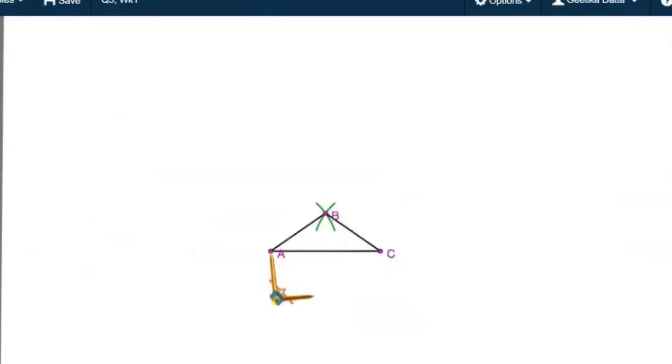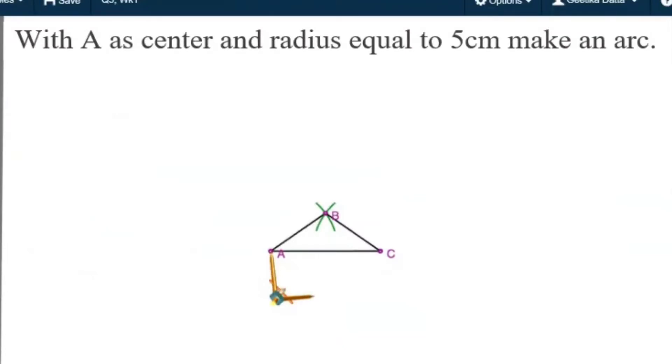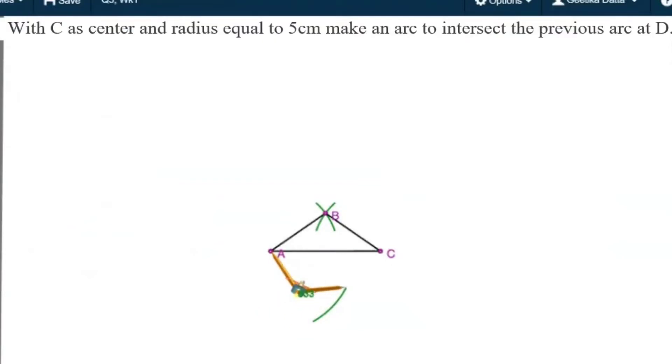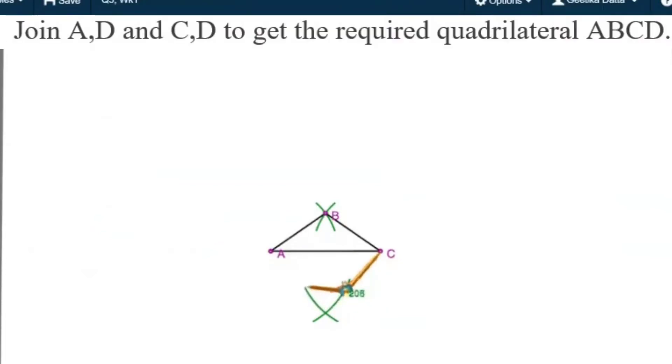Then I need to find out the point D now. So again, AD is given to us as 5 centimeters and CD is also 5 centimeters. So I will open the compass and use the ruler to take the radius of the compass equal to 5 centimeters. With A as center and radius 5 centimeters, I will make an arc. CD is also 5 centimeters. So with C as center and radius equal to 5 centimeters, I make another arc to intersect the previous arc at point D. I will join AD and CD to get the required quadrilateral ABCD.